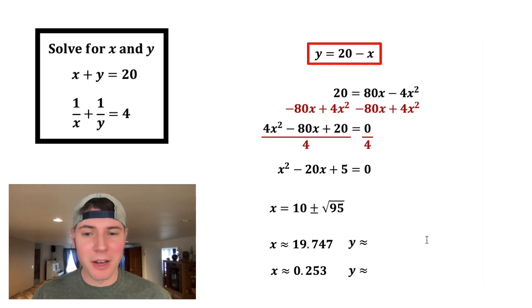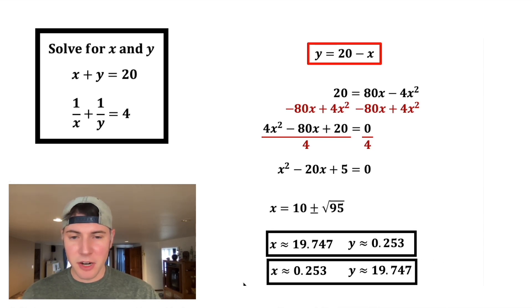And now let's find the corresponding y values. We can use this red box equation again, do 20 minus the corresponding x values, and that gives us y equals 0.253, or y equals 19.747. And these are the two possible values for x, and their corresponding values of y. How exciting.